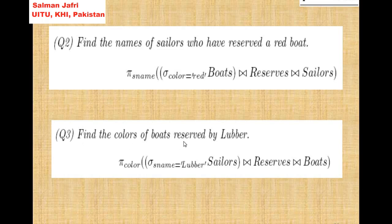In query 3, we have to find the colors of boats reserved by Luba. First, we will select the S_name from sailors where S_name is Luba. The answer of this part will be all rows where the sailor name is Luba from the sailors table.